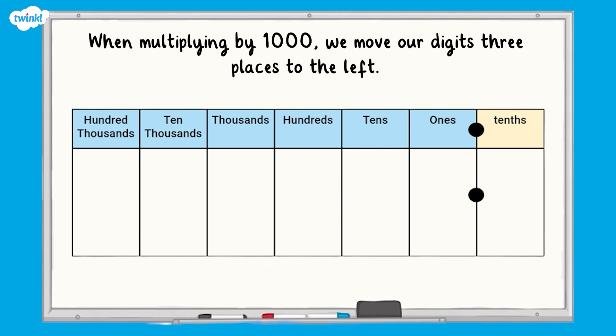Here's a place value chart. This place value chart has all of the columns we've already used, but it also has the tenths column.